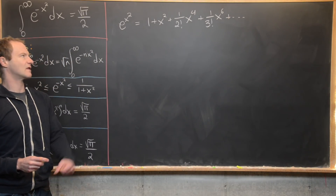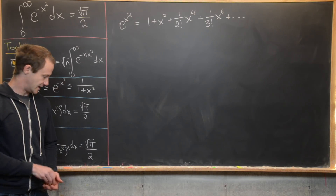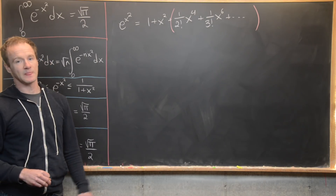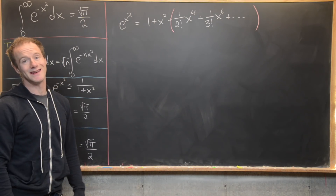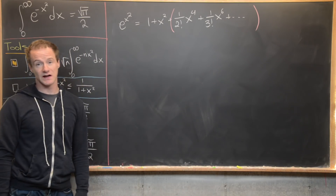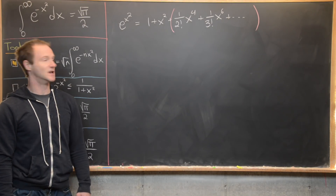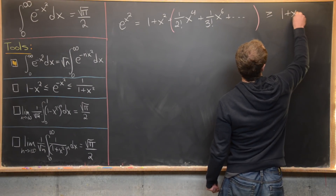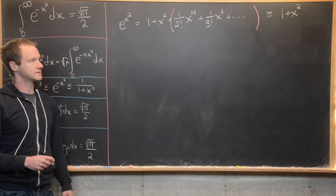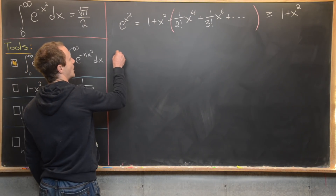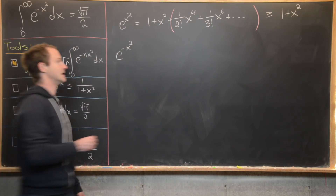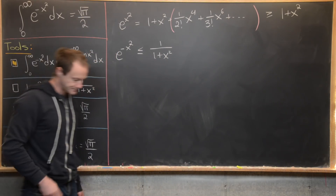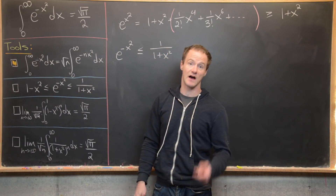Grouping all but the first two terms, all remaining terms are non-negative since they involve even powers of x. So e to the x squared is greater than or equal to 1 plus x squared. Taking reciprocals of both sides gives e to the minus x squared is less than or equal to 1 over (1 plus x squared), switching the inequality direction — establishing the upper bound.